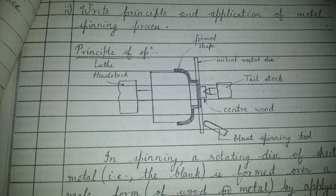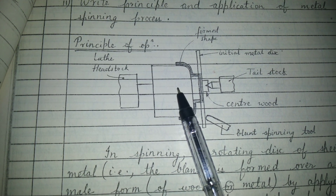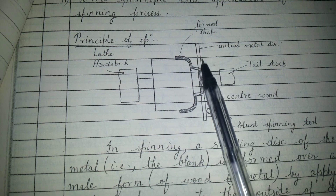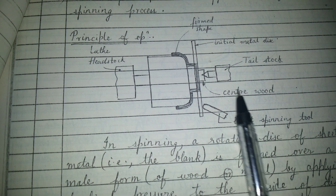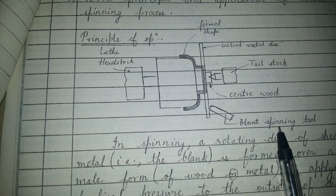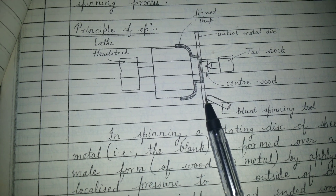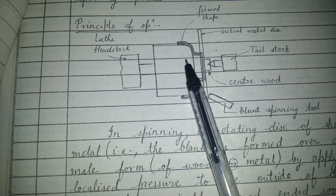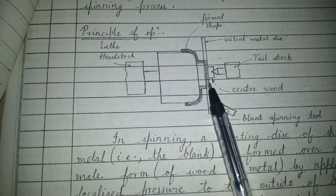Principle of the operation. As you can see, this is the lathe headstock and this is the tailstock. This is the initial metal disc, and this is the blunt spinning tool. Once the rotation takes place and the blunt spinning tool is pressed against this initial metal disc, this form shape gives the shape to the metal disc and it takes this form.